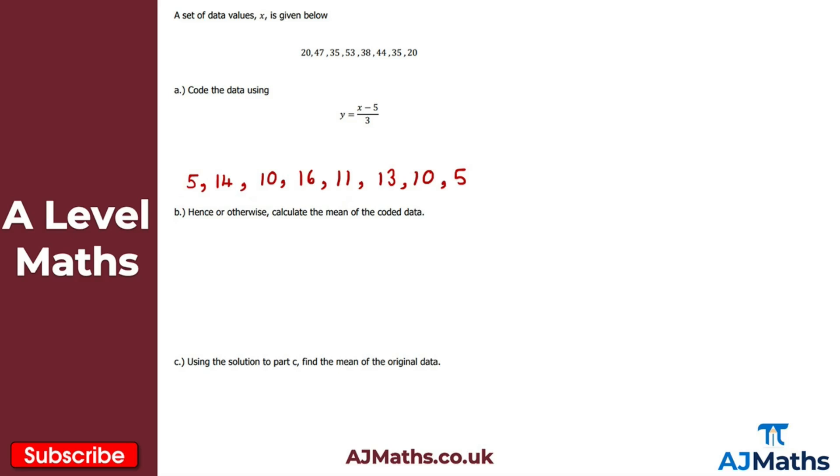Now for part b, it says hence or otherwise calculate the mean of the coded data. This is my coded data set. To calculate the mean of the coded data I need sigma y, the summation of the coded data set. That's going to be 5 plus 14 plus 10 and so on all the way up to 5 here.